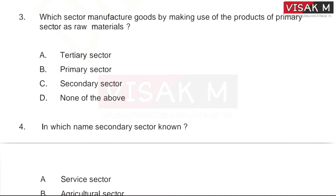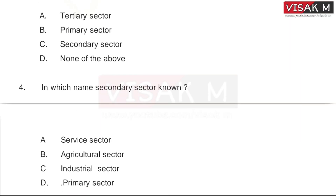Question three: Which sector manufactures goods by making use of the products of the primary sector as raw materials? The right answer is option C, Secondary Sector.